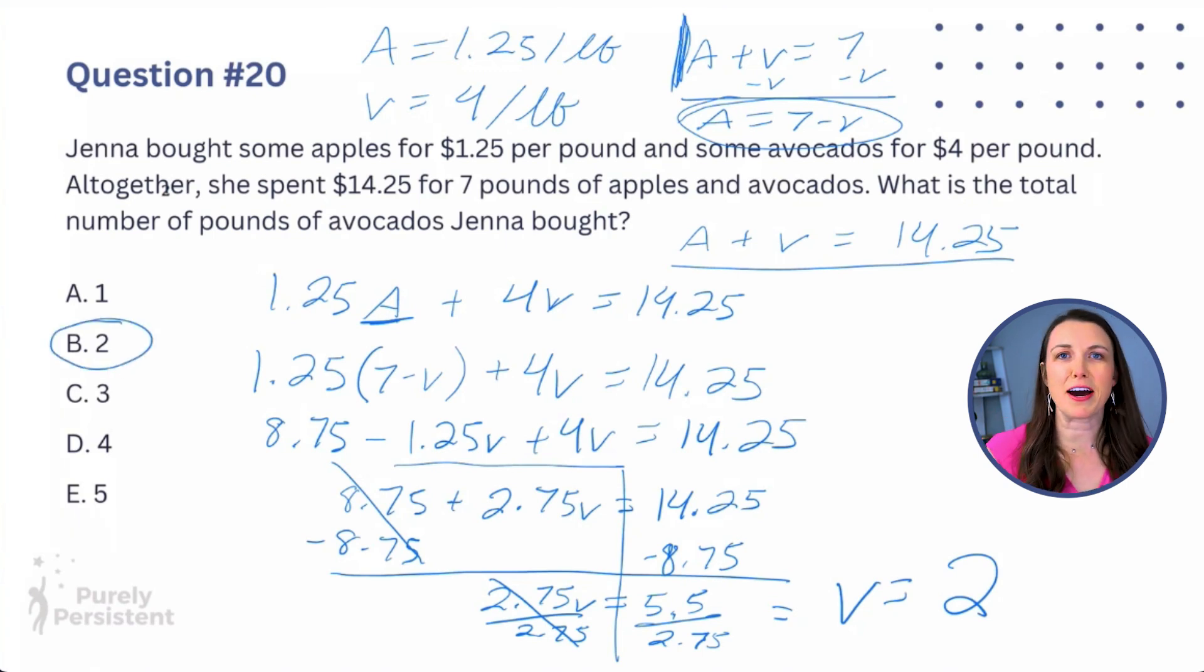Two pounds of avocados is how much she bought. So here's the question, how many pounds of apples did she buy? Five, right? Because seven minus two is five. But I don't think avocados are ever sold like that. Like when I go to the grocery store, it's one avocado costs $1.50 or $3 or however much the avocado costs. They never weigh avocados. It's just how much each avocado costs. But maybe your grocery store is different. I don't know.